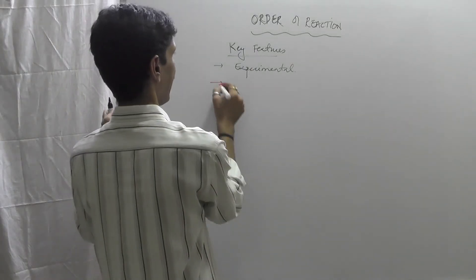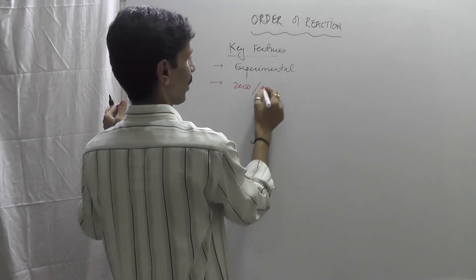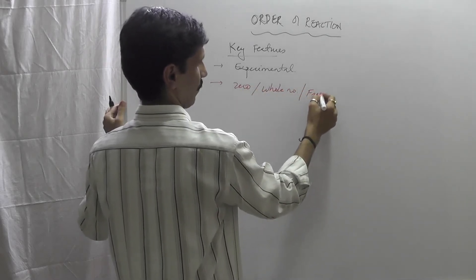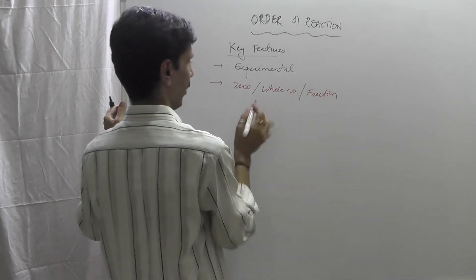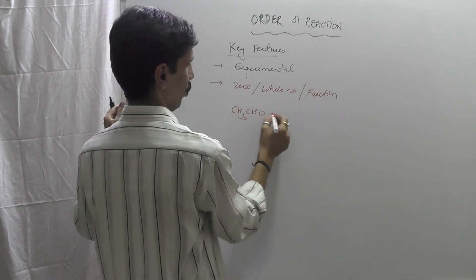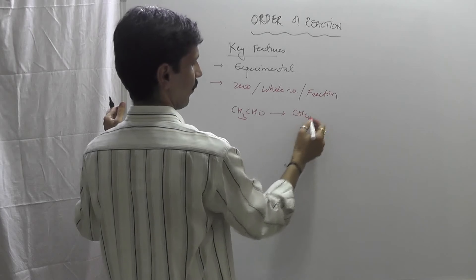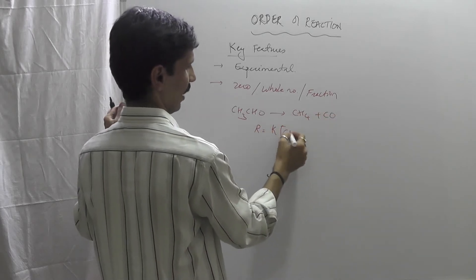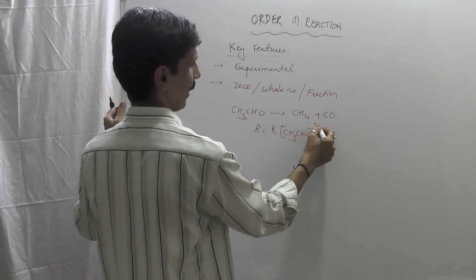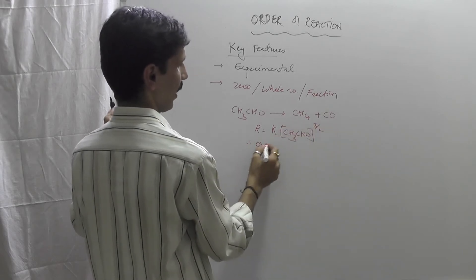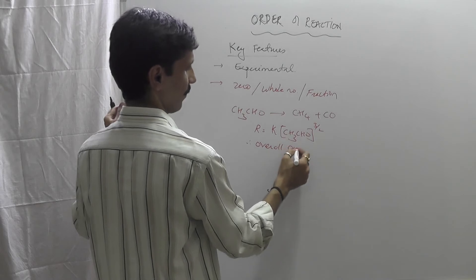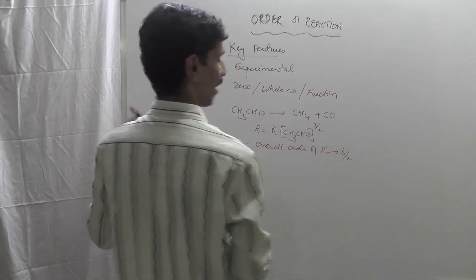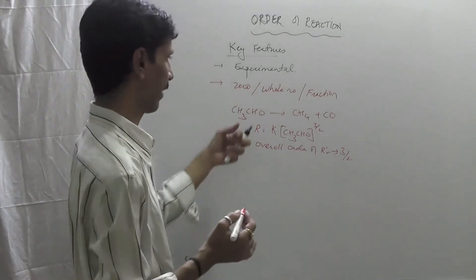Next one is it can have values which can be zero, or it can be a whole number, or it can be a fraction. I will give you an example. CH3CHO decomposing to give you methane and carbon monoxide - its rate law expression is R is equal to K[CH3CHO] raised to 3/2. And therefore we will say the overall order of reaction is 3/2, which is a fraction, or 1.5. That is what I can say.